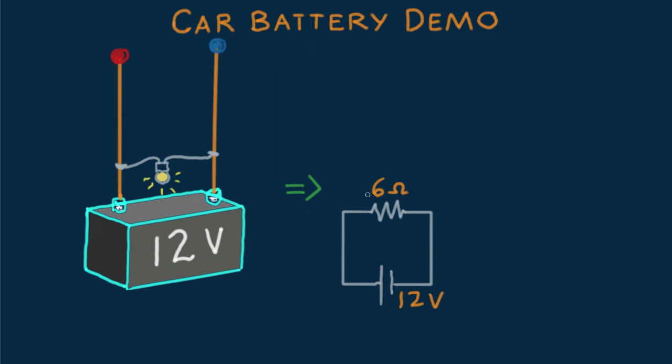How much current is in the circuit? From Ohm's Law, I is V over R, 12 volts divided by 6 ohms. That's 2 amps. So 2 amps flows through the light bulb.